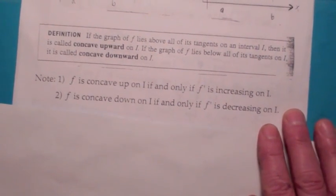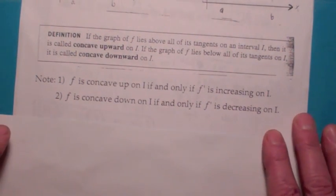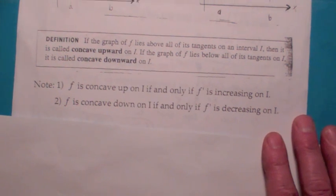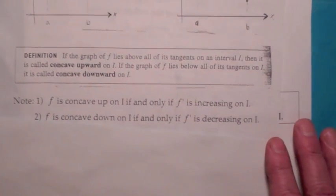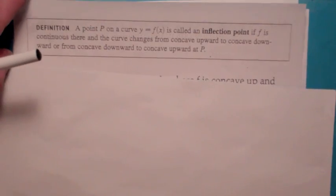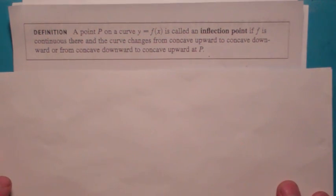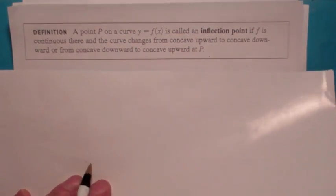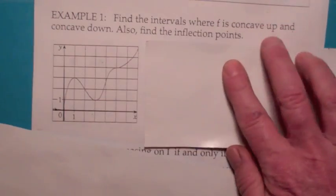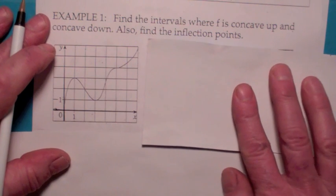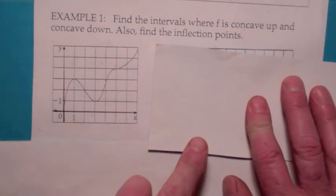This turns out to be really important. We're going to use this fact to help us find when a function is concave up and down, and to find the inflection points. An inflection point is a point on the graph where the concavity changes, either from up to down or down to up. It's important to note that an inflection point has to be a point on the graph.